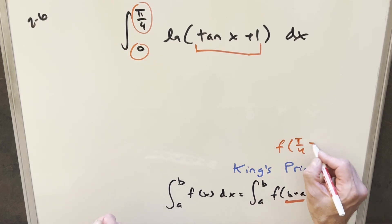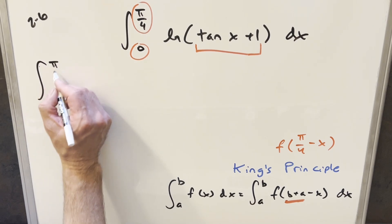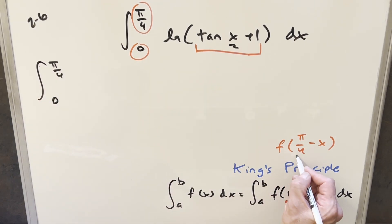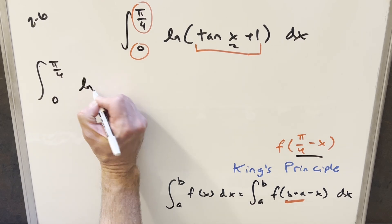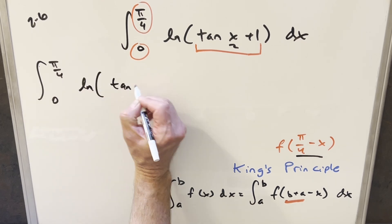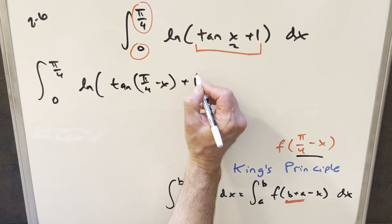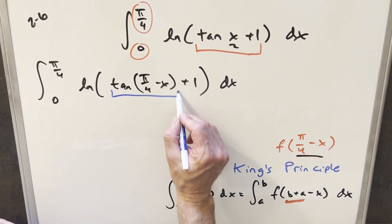And then we bring over this minus x. So going ahead with this, just notice our bounds are going to stay the same. So we're still going from zero to pi over four. And then for the x here, we're just going to need to input with this. So we're going to end up with natural log tangent of pi over four minus x. And we still have this plus one right here.